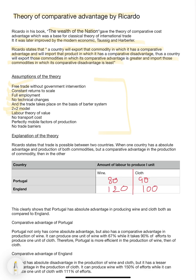Further assumptions include: labour theory of value, no transportation cost involved, perfectly mobile factors of production, no trade barriers — which is also related to no government intervention — and no tariff or restrictions on trade. Ricardo states that trade is possible between two countries when one country has absolute advantage in producing both commodities, but comparative advantage in the production of one commodity over the other.